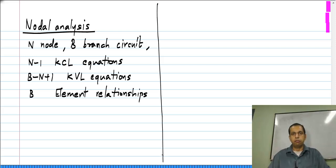Now depending on which of these two you do first, whether you first write KCL equations or KVL equations, there are different types of analysis. If you start off with KCL equations at n minus 1 nodes of the circuit, it is known as nodal analysis.